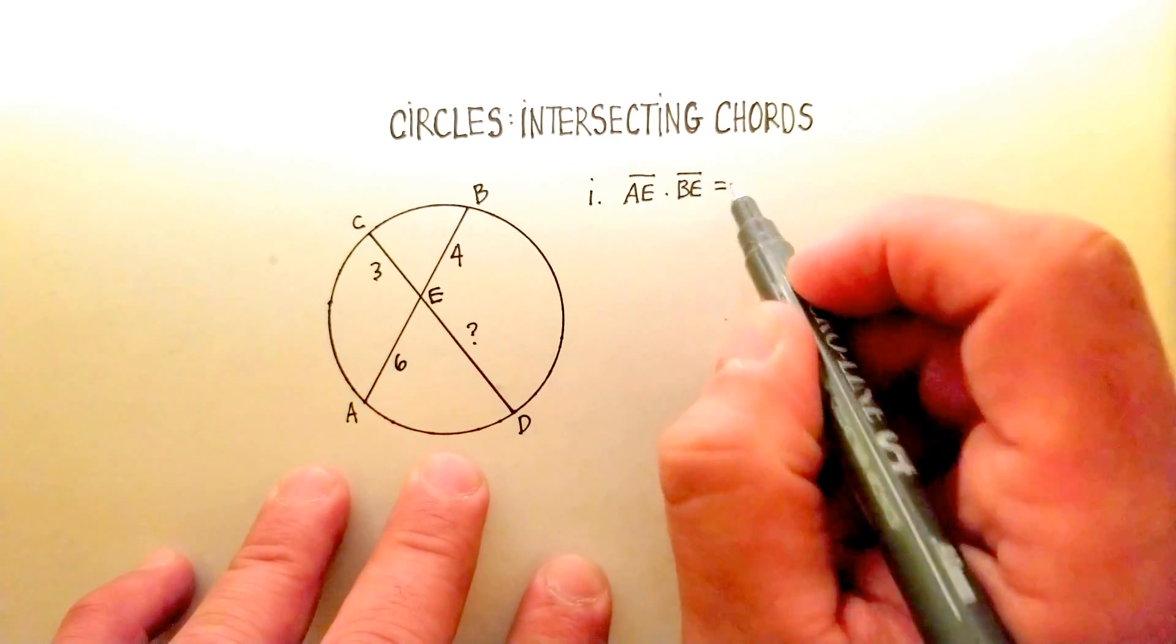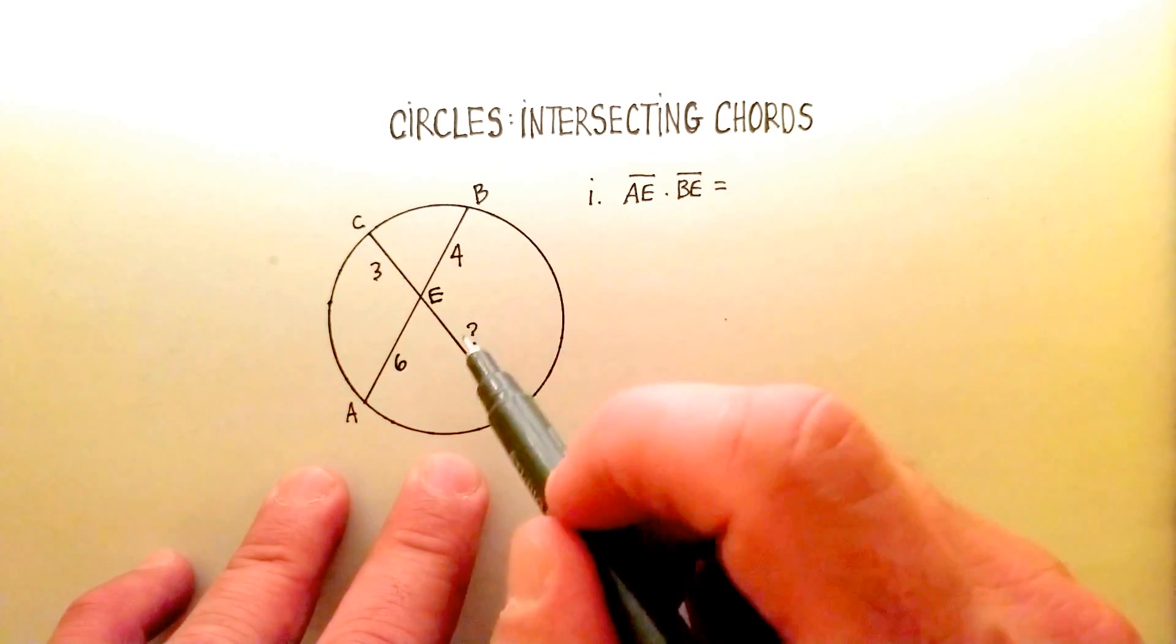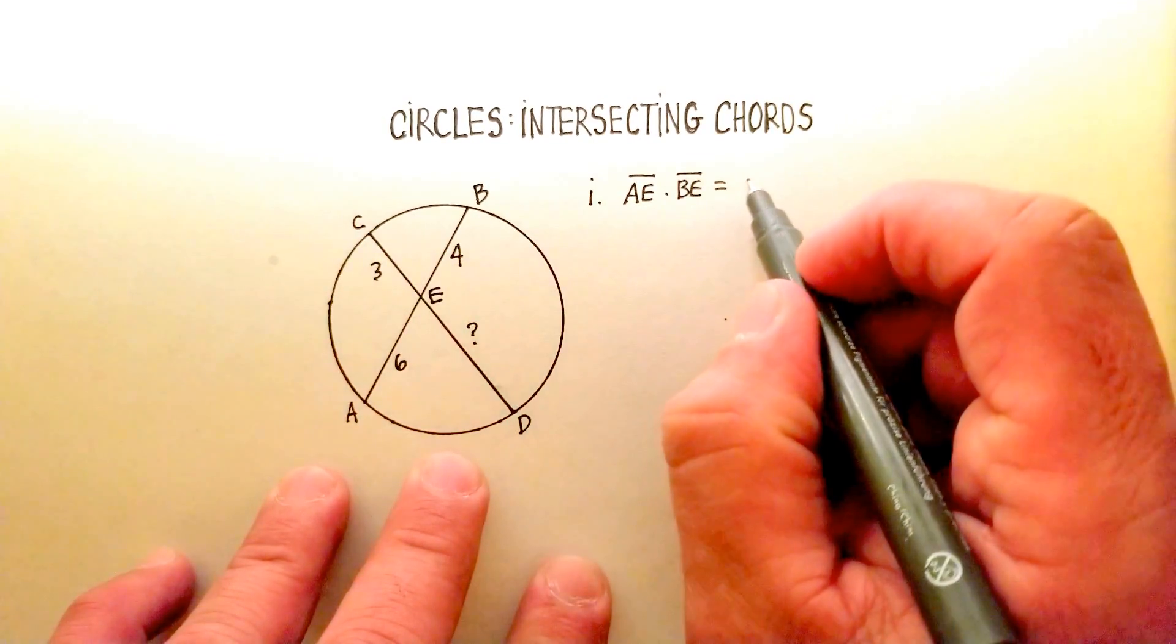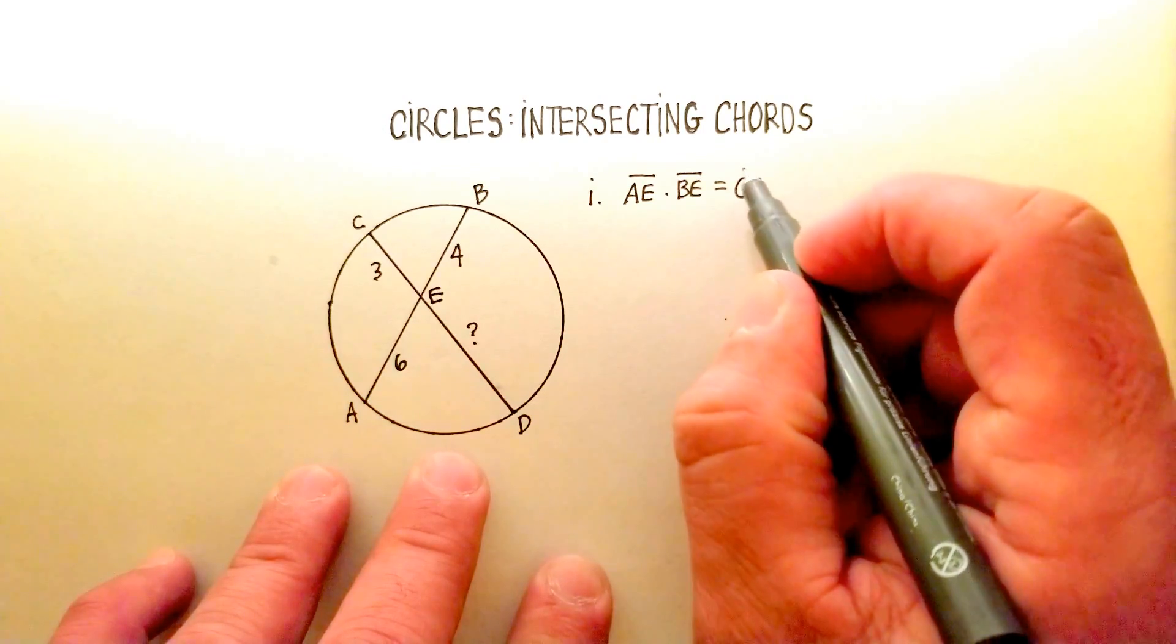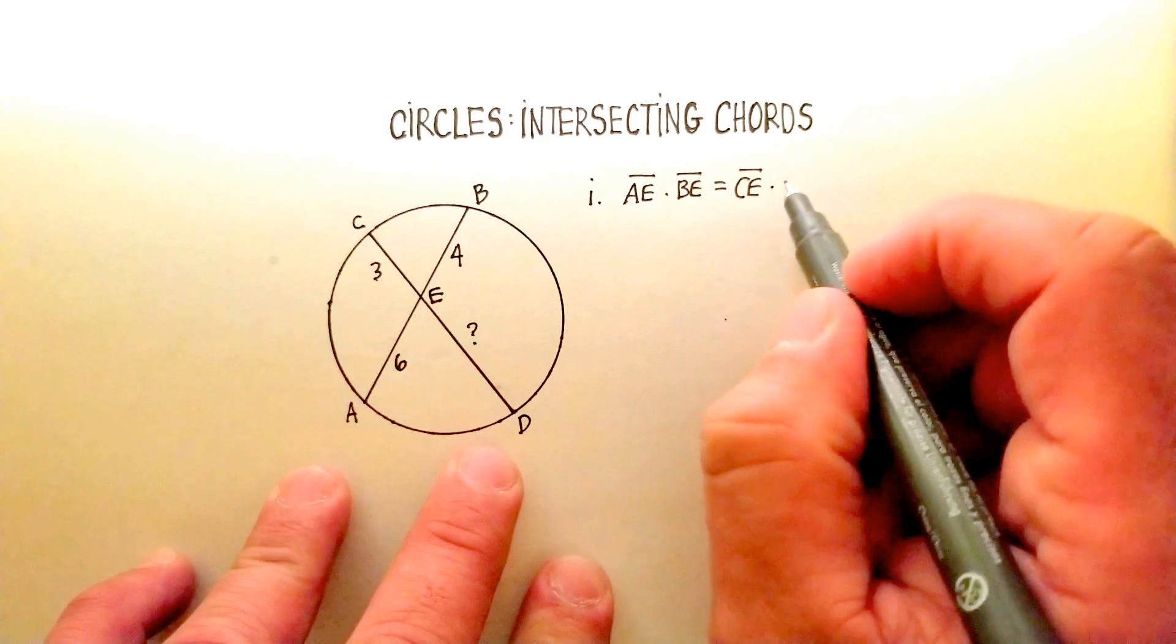it should be equal to the product of the other line segments. In this case, CE, line segment CE, times line segment DE.